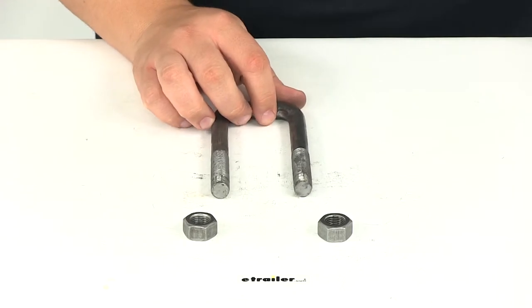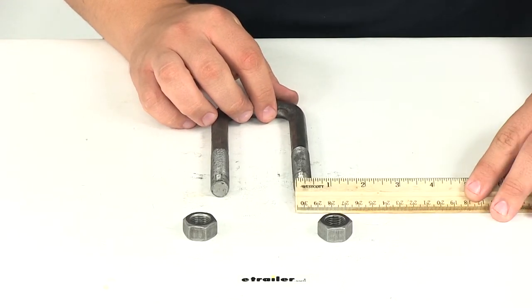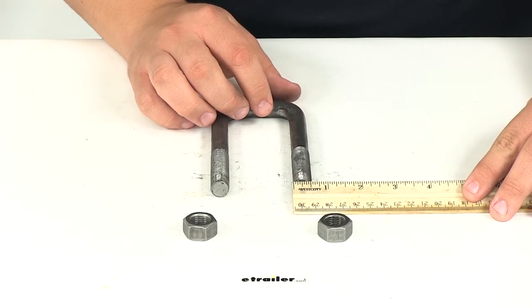If we take a measurement of the bolt diameter, that's going to give us a measurement of nine sixteenths of an inch.